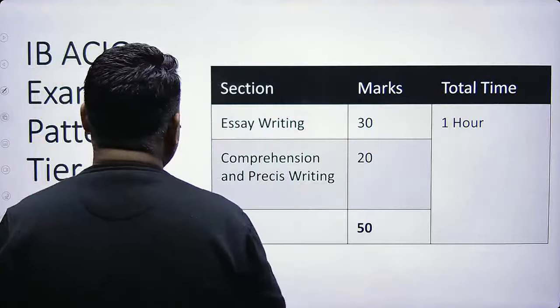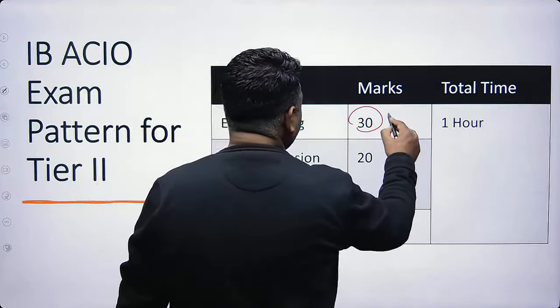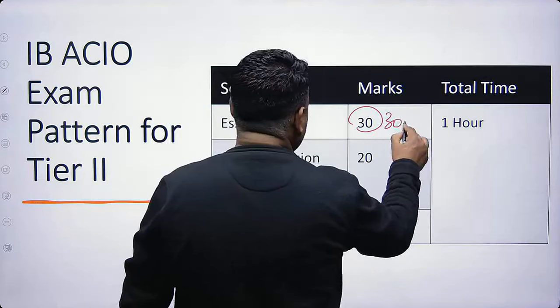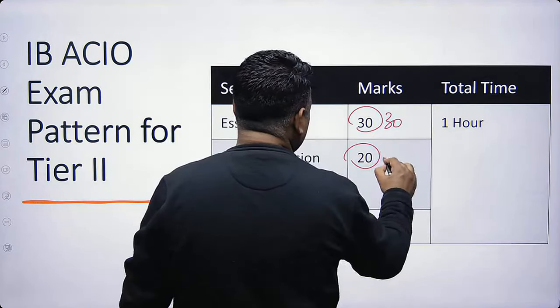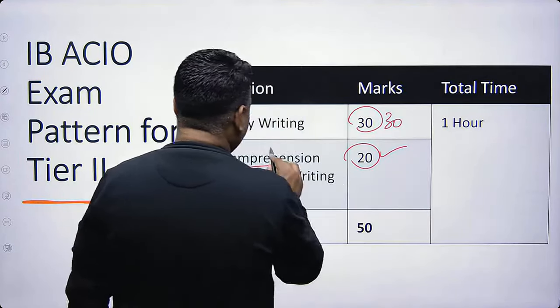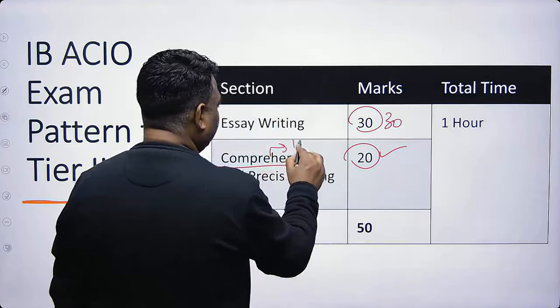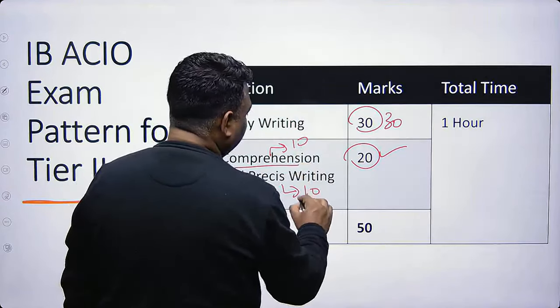It's a simple pattern. Essay writing is 30 marks. Comprehension and precis writing is 20 marks — comprehension is 10 marks and precis writing is 10 marks.